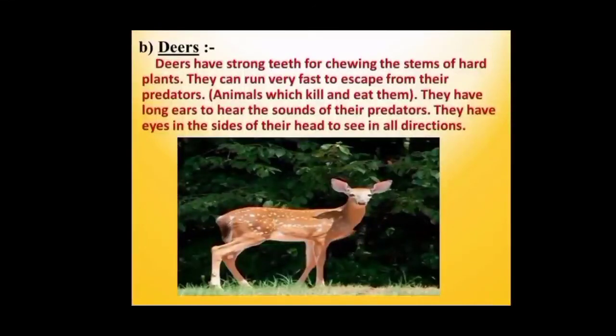A deer is another animal that lives in forest and grassland. It has strong teeth for chewing hard plant stems of the forest. A deer needs to know about the presence of predators in order to run away from them and not become their prey. It has long ears to hear the movement of predators like lion and tiger. The eyes on the side of its head allow it to look in all directions for danger. The speed of the deer helps it to run away from predators.